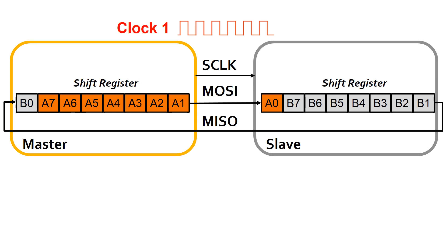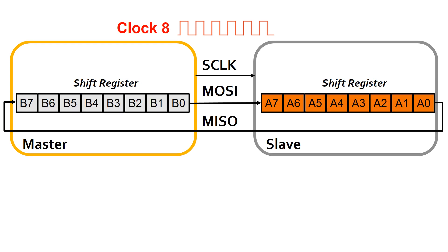At the first clock, bit 0 will be shifted. Then bit 1, bit 2, and finally at the 8th clock cycle, the data of master and slave will be swapped. One interesting thing to know is why SPI is so popular — it is because of its shift register. Data transfer using a shift register is very cheap and easy compared to other communication protocols like UART and I2C.